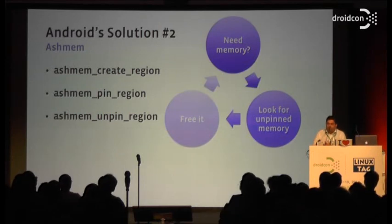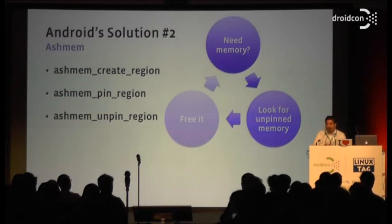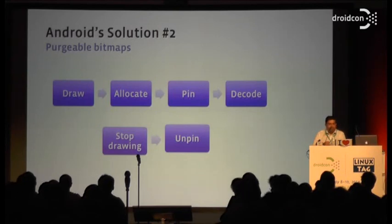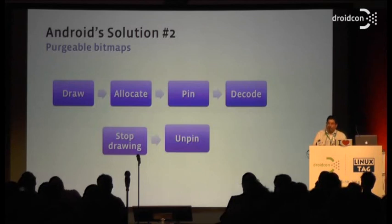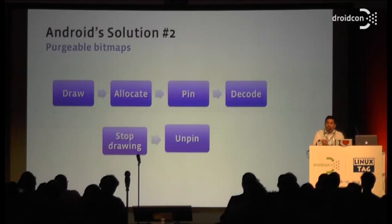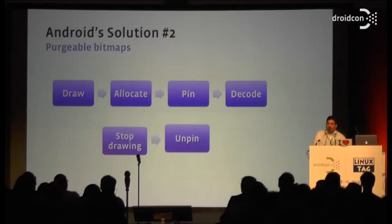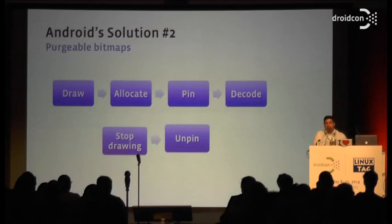This means you can do a sort of soft free — you unpin the memory, but if you need that data back again, you pin it again, and if the data is still there, it's still there. The use of this for images is fairly obvious: you only need the pixels in a bitmap when it's on screen. When you first load a bitmap, you allocate the Ashmem region, pin it, and show it on screen. When it goes off screen, you unpin it. If it's still there next time it needs to display, you pin it again. If it's been reclaimed, you have to decode it again before it comes on screen. This sounds like a perfect solution — it only takes up memory when it's on screen, and can be reclaimed when necessary.